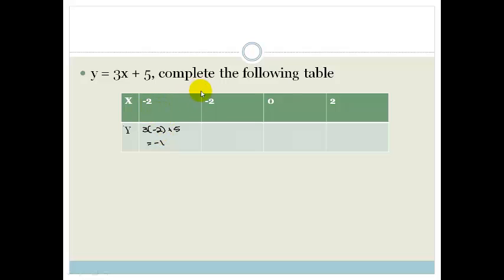If x is minus 1, then you've got 3 times minus 1 plus 5, which is going to be minus 3 plus 5 which is 2.